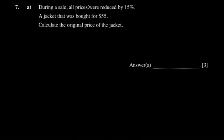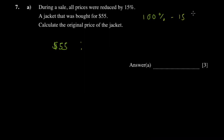The question says: during a sale, all prices were reduced by 15%. A jacket was bought for $55 — calculate the original price of the jacket. The way I always advise students is to identify the figures in the question. The $55 was the price at which the jacket was bought. You have to know what percentage $55 corresponds to. If the price is reduced by 15%, then 100% minus 15% gives you 85% — so $55 corresponds to 85% of the original price.